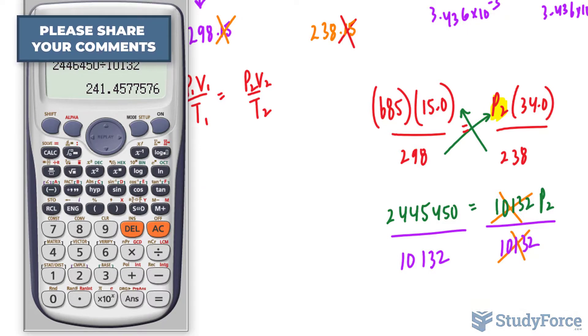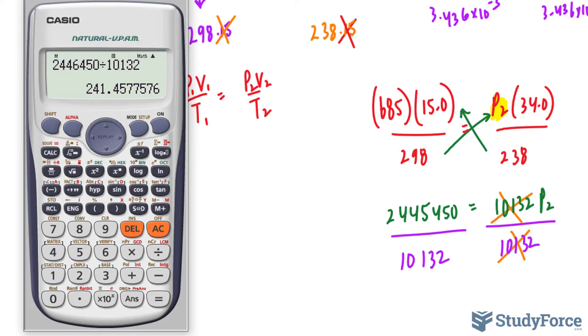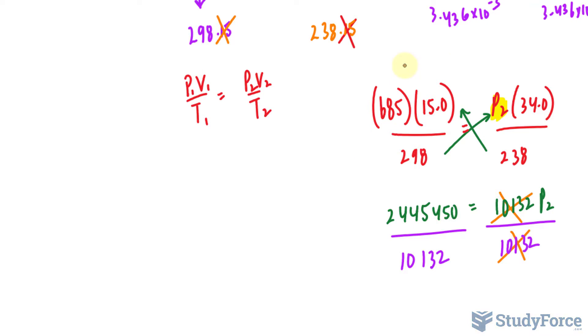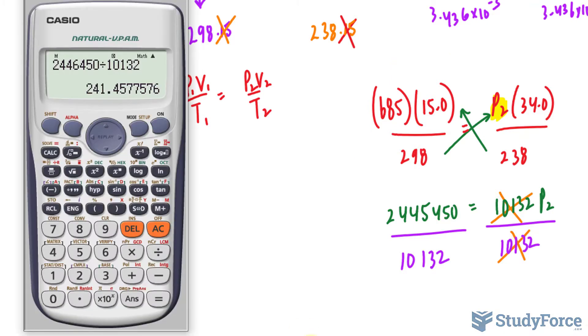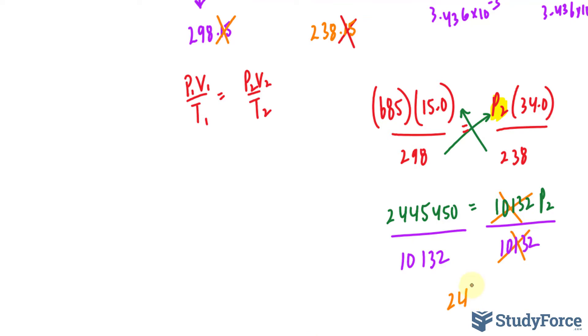Now in terms of significant figures, since we're multiplying and dividing here, the lowest number of significant figures throughout this equation was 3. So we should limit ours to 3 as well. The answer is 241 mmHg.